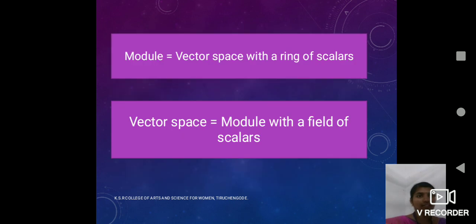A module is a vector space except the scalars are a ring. Alternatively, we would say a vector space is a module where the scalars are a field. Just as groups can have subgroups, rings can have subrings and vector spaces can have subspaces, and also modules can have submodules.